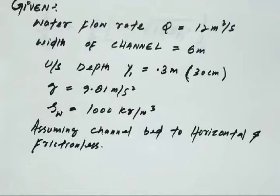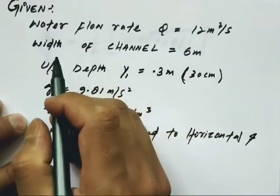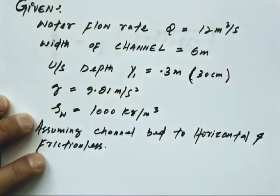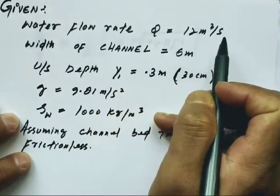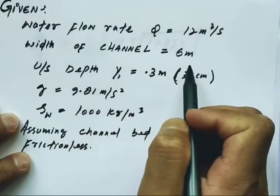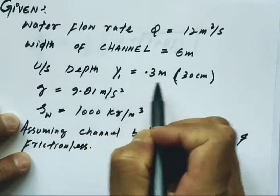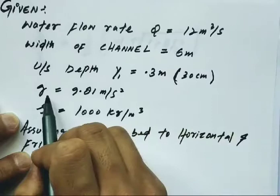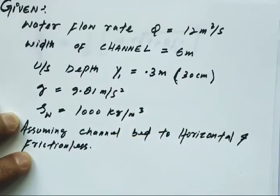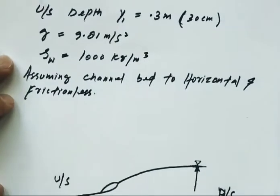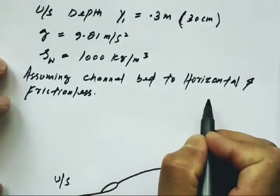The given data from the question: water flow rate Q equals 12 m³/s, width of channel B equals 6 meters, upstream depth y1 equals 0.3 meters, acceleration due to gravity 9.81, unit weight of water 1000. Here we have an assumption that the bed is horizontal and frictionless.